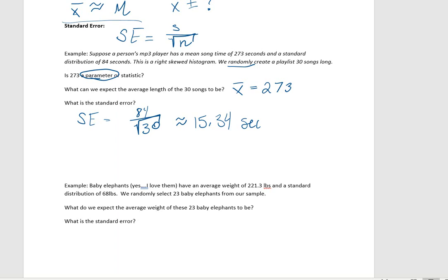So here's what that means, is that if we take 30 random songs from our playlist, we expect that if we add all of their playtimes together and divide by 30, that is, take the average, we expect the average playtime to be around 273 minutes, but we're probably going to be off by a little bit, right? So how much are we going to be off by? We're going to be off by probably 15.34 seconds.